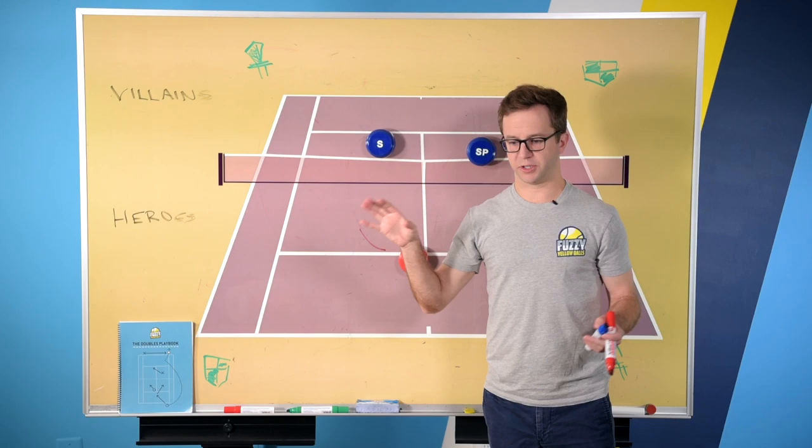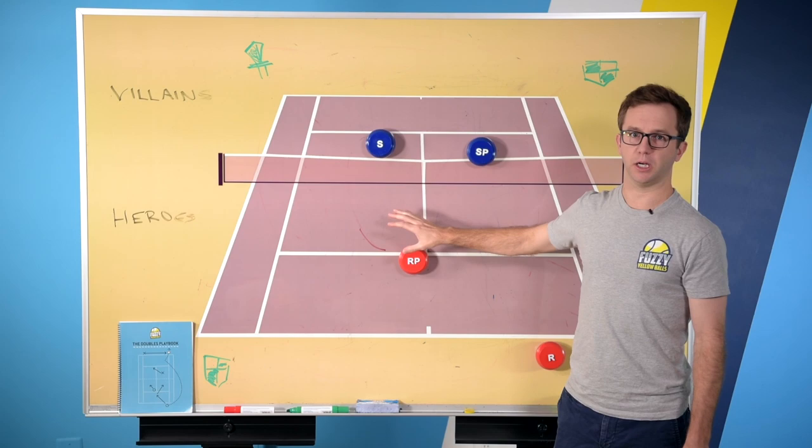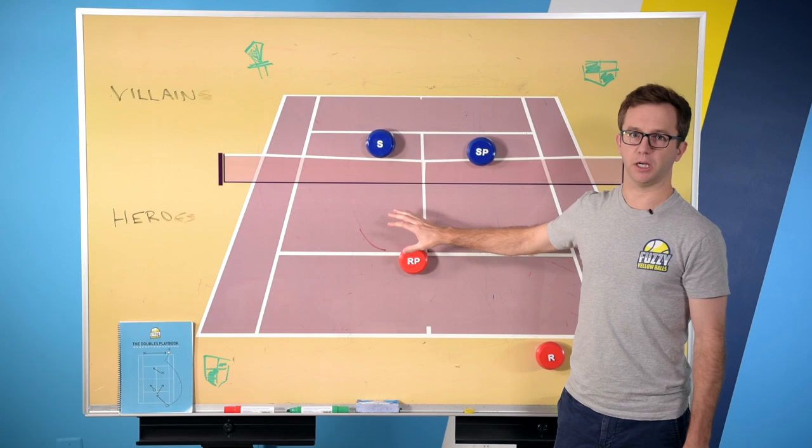So that can be sort of an interim step where your team is still being aggressive and trying to get the net player involved. The net player just isn't you. You're hanging back as the returner trying to set up your partner by ripping ground strokes.